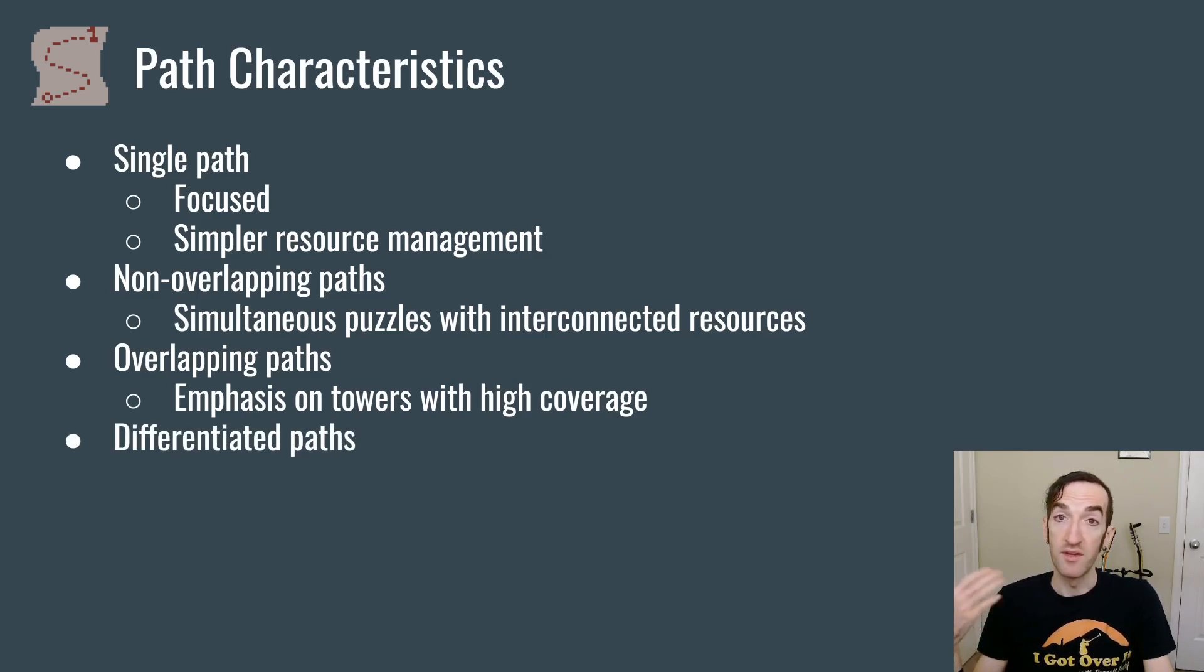If you have differentiated paths, where the paths either maybe one of them is shorter and one is longer, or one of them has more or fewer towers, or one of them has different monsters that spawn on it than the other, then that is going to give the player a complex prioritization puzzle. Where they need to think about how they're allocating their resources and what order they're building towers in order to navigate it.